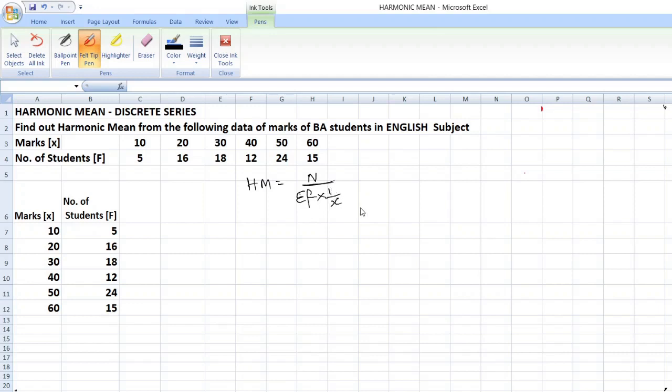So, what are the steps to find out? Steps. Number one. Step number one. Take the reciprocals. Take the reciprocals of each variable. Okay.